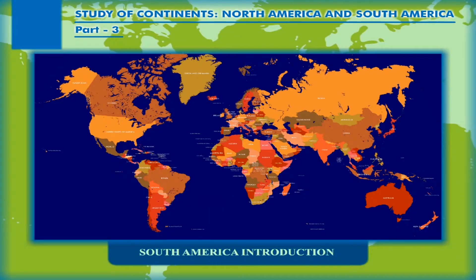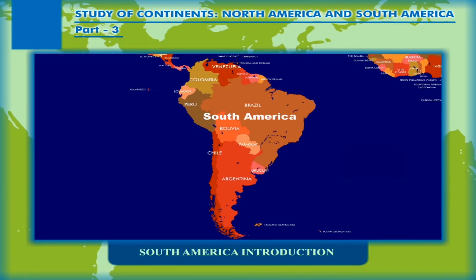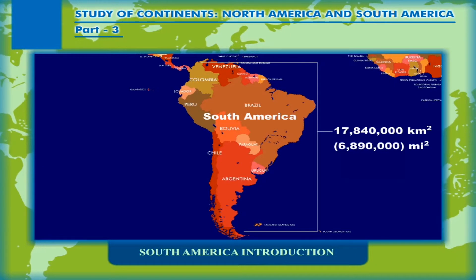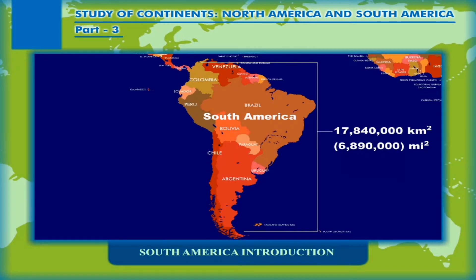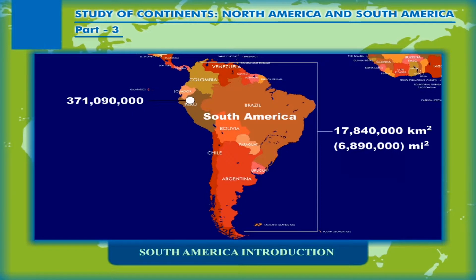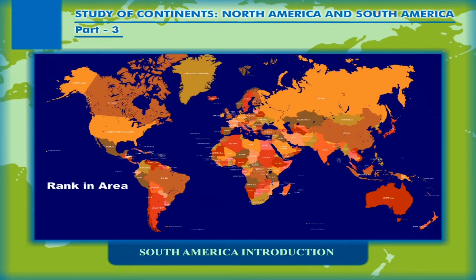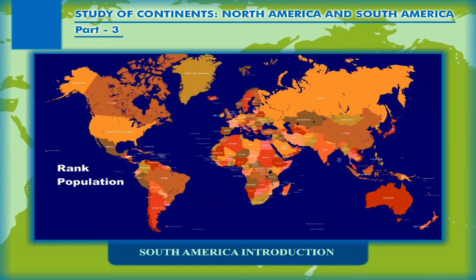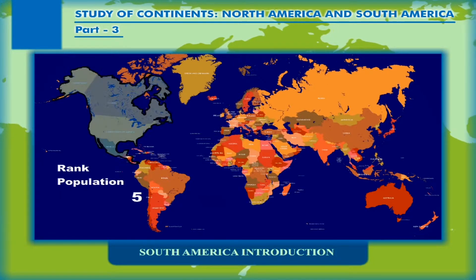South America has an area of 17,840,000 square kilometers (6,890,000 square miles). Its population as of 2005 has been estimated at more than 371,090,000. South America ranks fourth in area after Asia, Africa, and North America, and fifth in population after Asia, Africa, Europe, and North America.